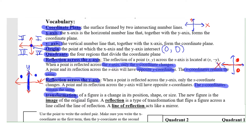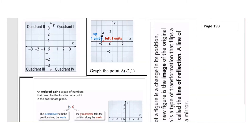A transformation of a figure is a change in its position, shape, or size. You'll use this in eighth grade and high school geometry. The new figure is called the image of the original. A reflection is a type of transformation that flips a figure across a line called the line of reflection, which acts as a mirror. These are important vocabulary words — turn to page 193 in your guided notebook.